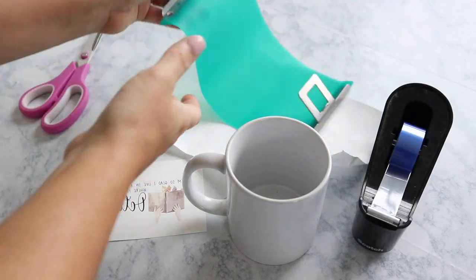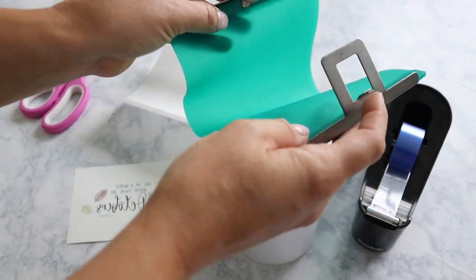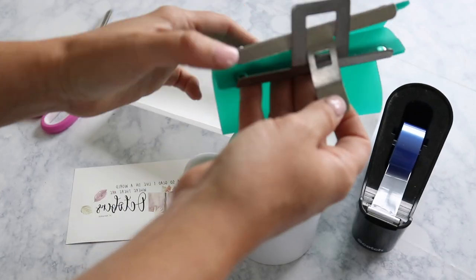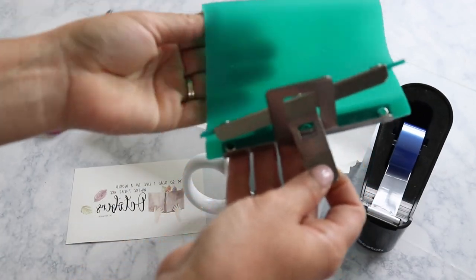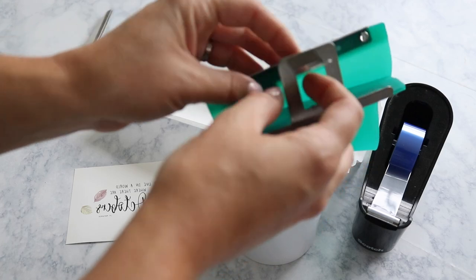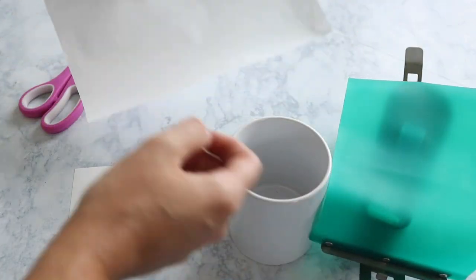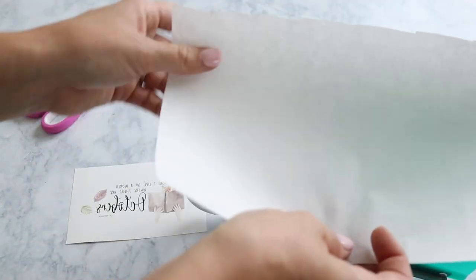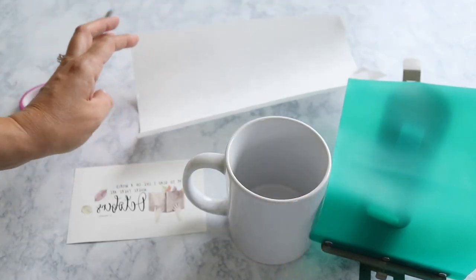You'll need heat resistant tape and then I purchased this set of silicone sleeves off of Amazon. I'll have a link to it in the description box down below. It just holds everything onto the mug nice and tight and then we're also going to need some butcher paper.